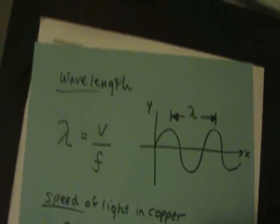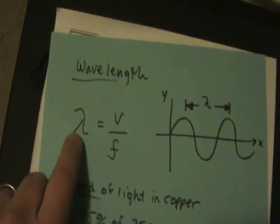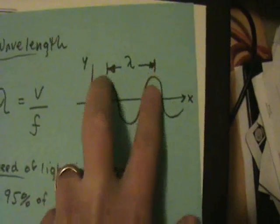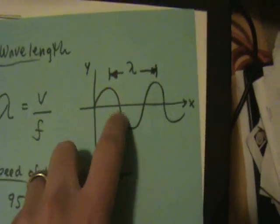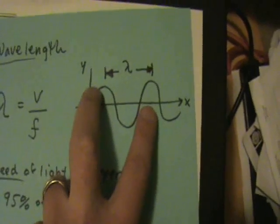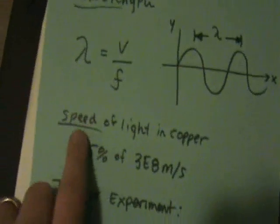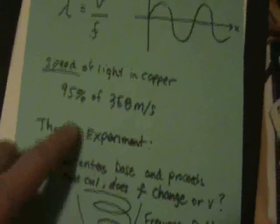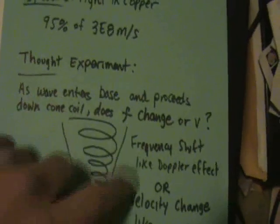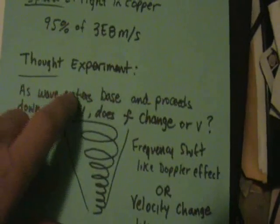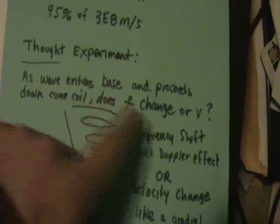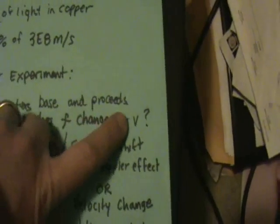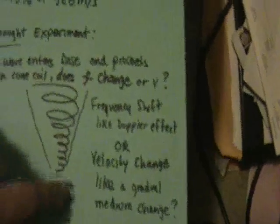Here's a thought experiment: the formula for wavelength is velocity over frequency, and wavelength is basically how big a cycle is — the distance between two peaks. The speed of light in copper is 95% of the speed of light in a vacuum. So if we have a cone-shaped coil and a wave enters the base and proceeds down toward the apex, do we expect the frequency to change, or do we expect the velocity to change?